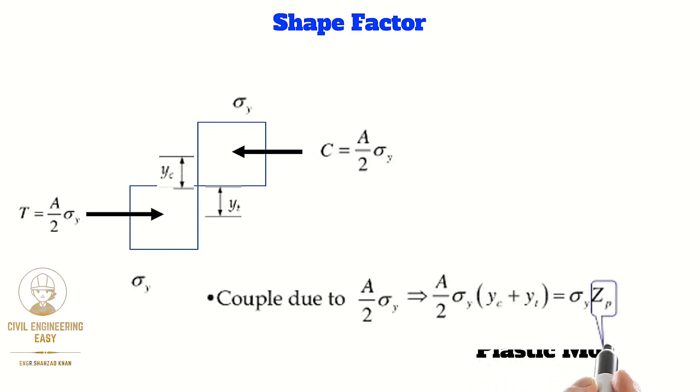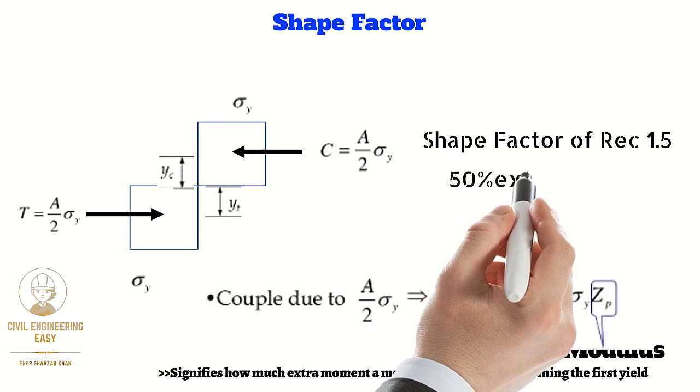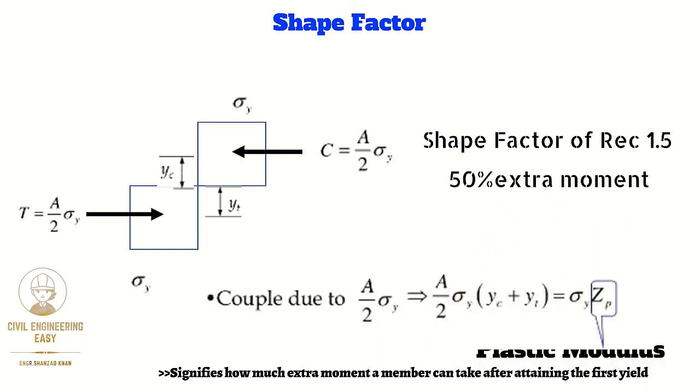In short summary, the shape factor signifies how much extra moment a member can take after attaining the first yield. It is a geometrical property, not a material property. For example, the shape factor for rectangular section is 1.5, which means 50 percent extra moment a member can take after attaining first yield.